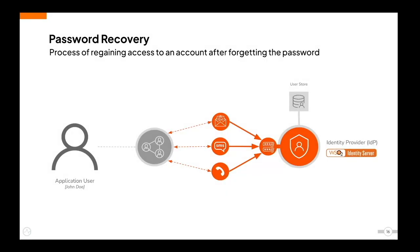WSO2 Identity Server also enables administrators to initiate a password change for forgotten, compromised, or vulnerable passwords. Password reset can be done via SMS, email, or even offline. Password reset via email is done by emailing a password reset link to the user's registered email ID. Password reset via SMS is done by sending a one-time password to the user's registered mobile number. The user can also reset the password by contacting the call center and requesting for a new password.